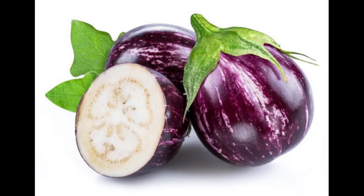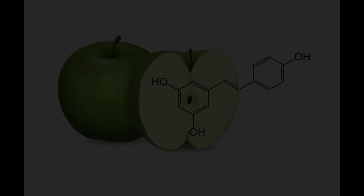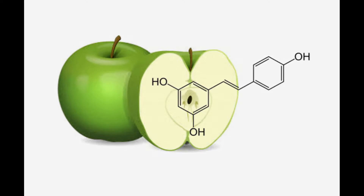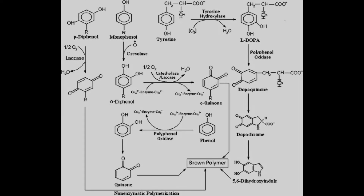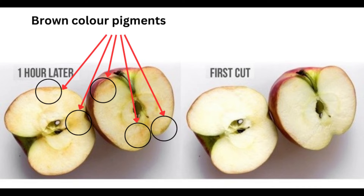Enzymatic browning is one of the most important color reactions that affect fruits, vegetables, and seafood. It is catalyzed by the enzyme polyphenol oxidase (PPO), also referred to as phenol oxidase, phenolase, monophenol oxidase, diphenol oxidase (DPO), and tyrosinase. This enzyme catalyzes the reaction of phenols into polyphenols — red, brown, or even black pigments that color the food brown.